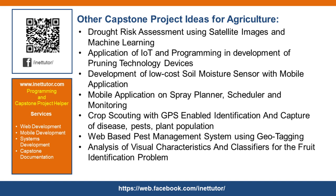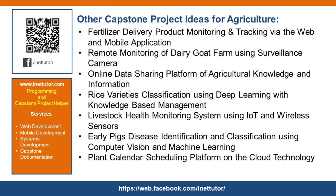Application of IoT and programming in development of pruning technology devices. Development of low-cost soil moisture sensor with mobile application. Mobile application on spray planner, scheduler and monitoring crop scouting with GPS-enabled identification and capture of disease, pests, and plant population. Web-based pest management system using geotagging. Analysis of visual characteristics and classifiers for the fruit identification problem. Fertilizer delivery product monitoring and tracking via web and mobile application. Remote monitoring of dairy goat farm using surveillance camera. Online data sharing platform of agricultural knowledge and information. Rice varieties classification using deep learning with knowledge-based management. Livestock health monitoring system using IoT and wireless sensors.